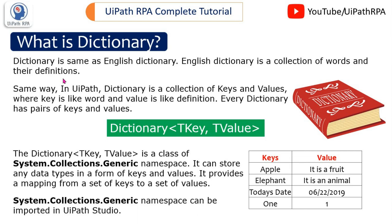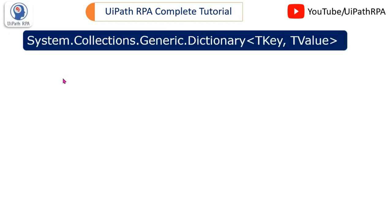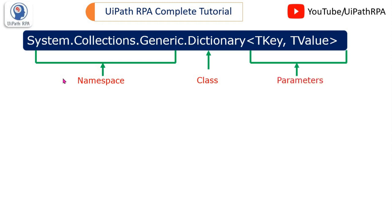The system.collections.generic namespace can be imported in UiPath Studio. If you have learned .NET, in C# we import this namespace using the 'using' keyword like 'using system.collections.generic'. In UiPath we have the feature to go to Import and type this to select and import it into UiPath Studio. The dictionary is a class within that namespace, and TKey and TValue are parameters passed with the dictionary class.